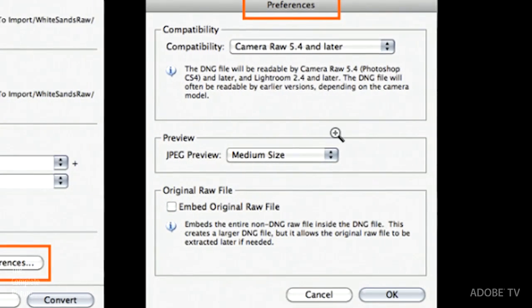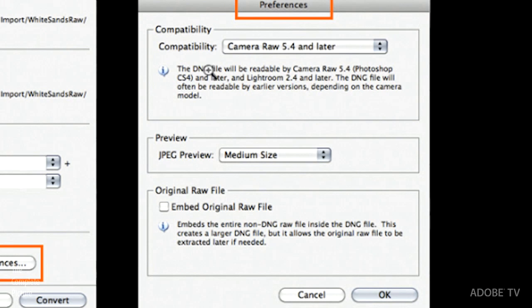So let's actually look at those. If you click Change Preferences, you would get the secondary window, where you can choose the compatibility, JPEG preview size, and whether or not you want to embed the original raw file. I'm going to point this out just because some people are very conservative. And so when they convert their images to DNG, they also want to embed the original raw file. Well, obviously, this is going to make your file size quite a bit larger. So I think if I was really conservative, and I, for some reason, still wanted my original NEF files or CRW files, I think I would just archive those to a hard drive.